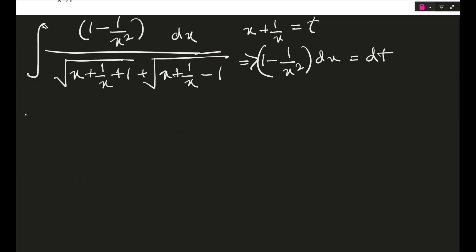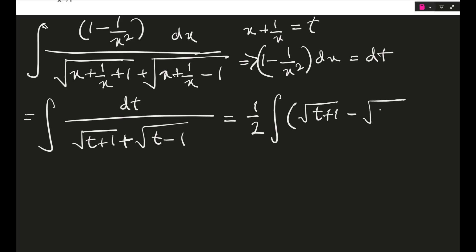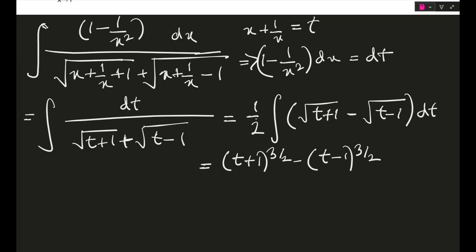Proceeding, the integral becomes ∫ dt / (√(t+1) + √(t−1)). A simple rationalization step makes the denominator 2, so this becomes (1/2) ∫ (√(t+1) − √(t−1)) dt. After integration this gives (t+1)^(3/2) − (t−1)^(3/2), each divided by 3/2, so multiplied by 1/3, plus a constant.